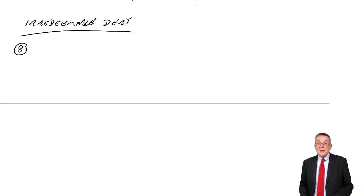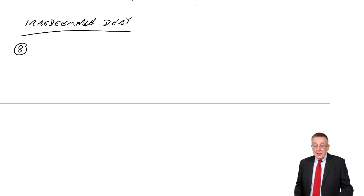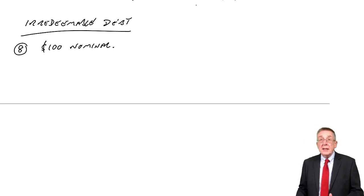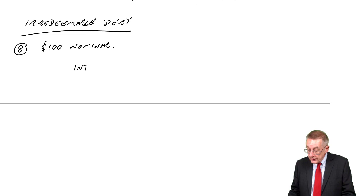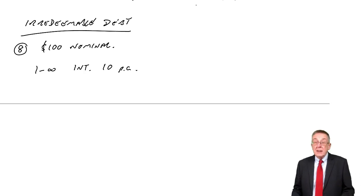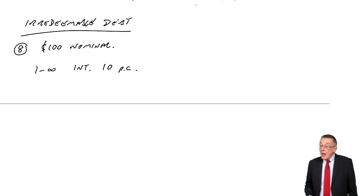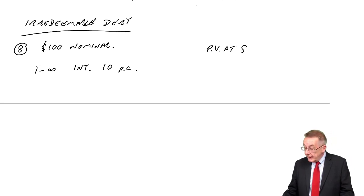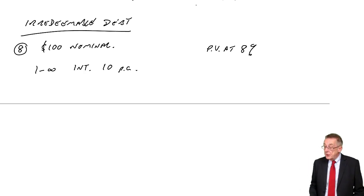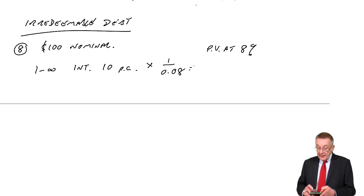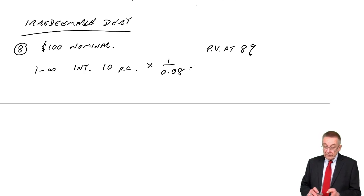Using the basic principle, on $100 nominal, an investor will be receiving interest of $10 per year. If it's irredeemable, it'll be $10 a year in perpetuity. The market value is the present value discounted at the investor's required return of 8%. The discount factor for a perpetuity is 1 over R — 1 over 0.08 — meaning the market value will be $125.